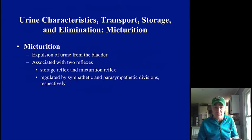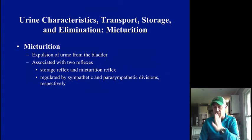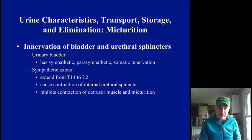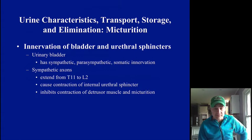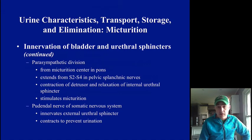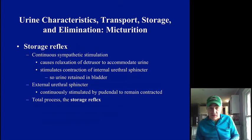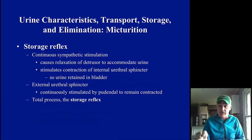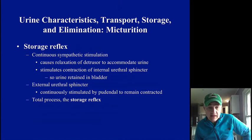Micturition is the expulsion of urine, and there are two different reflexes: the storage reflex and the micturition reflex. Storage is driven by the sympathetic nervous system; micturition is driven by the parasympathetic nervous system. The urinary bladder has somatic, sympathetic, and parasympathetic innervation — sympathetic mainly from the lower thoracic and upper lumbar vertebrae via splanchnic nerves, and somatic via the pudendal nerves controlling the external sphincter. The storage reflex — sympathetic stimulation — causes relaxation of the detrusor muscle and contraction of the internal urethral sphincter, keeping the exit closed and letting the bladder fill.